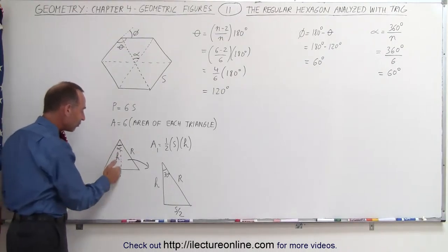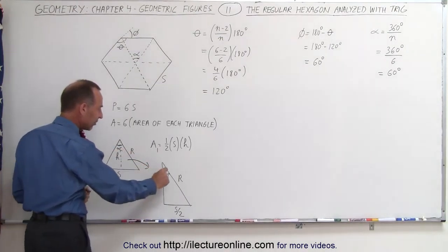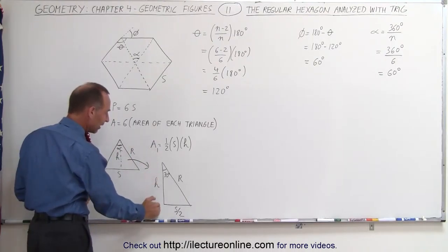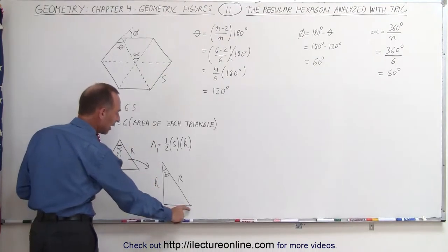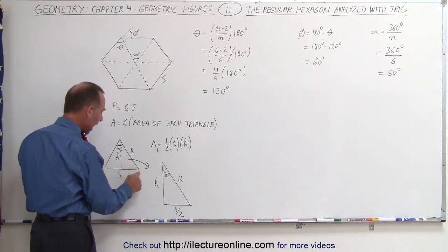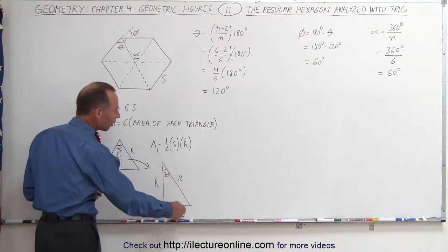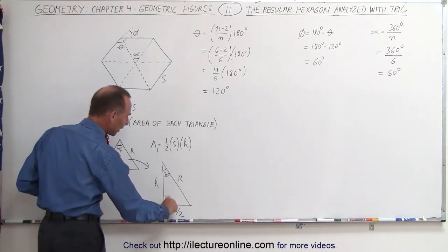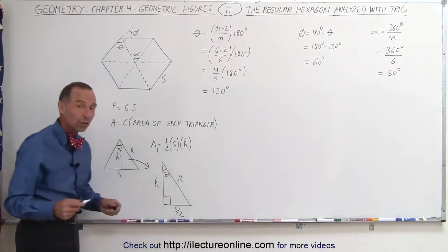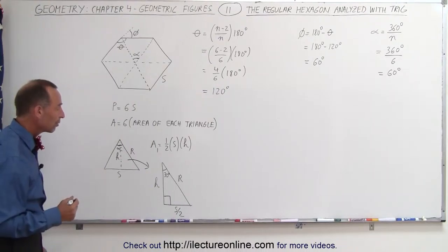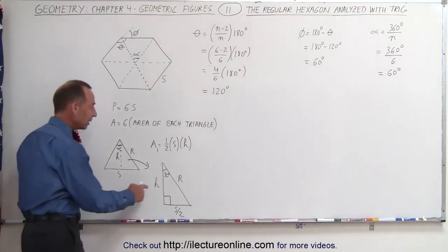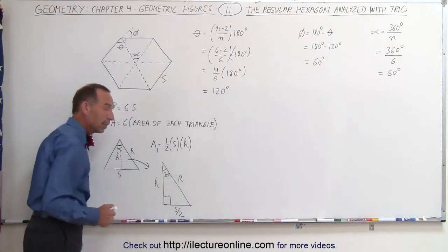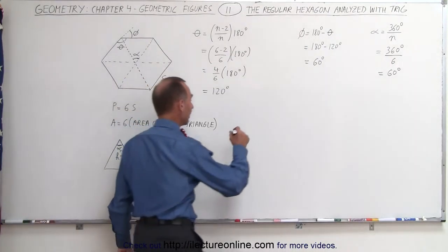If we now take half the triangle such that this angle is 30 degrees — which is half of 60 degrees — we still have the height of the triangle here and S divided by 2, because we took half the base. We still have R. Now we have a right triangle, and whenever we have a right triangle we can employ the trigonometric functions. We're going to define a relationship between H and S, and between H, S, and R.